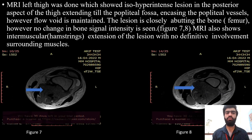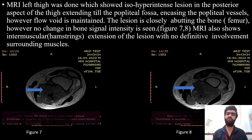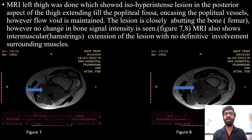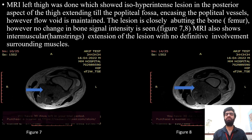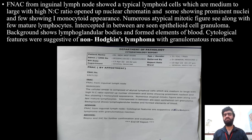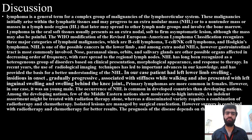The CT findings favored the possibility of lymphoma. MRI of the left thigh showed an iso-to-hypointense lesion in the posterior aspect of the thigh extending till the popliteal fossa, encasing the popliteal vessels; however, flow void was maintained. The lesion was closely abutting the bone, but no change in bone signal intensity was seen. MRI also showed intramuscular extension of the lesion with no definitive involvement of the surrounding muscles. Fine needle aspiration cytology of this lesion suggested high suspicion for Non-Hodgkin's Lymphoma with granulation tissue reaction.